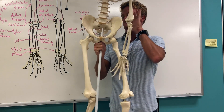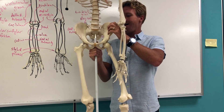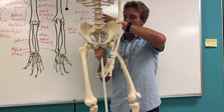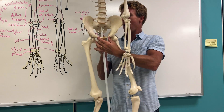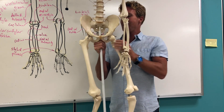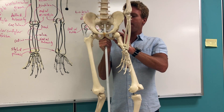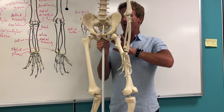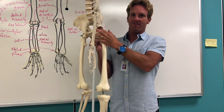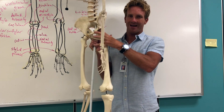The lumbar vertebrae connect to the pelvis, which consists of three different bones. You're going to have the ilium, which is more superior. You're going to have the pubis, which is more anterior and inferior, and then the ischium, which forms the posterior and inferior part of the pelvis. All these bones meet together and fuse at a little cavity where the hip sits, called the acetabulum.